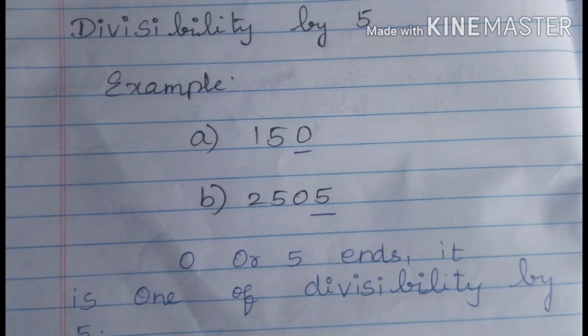Example: 150. The last digit is 0, so it is divisible by 5. Next example: 2505. The last digit is 5, so it is divisible by 5.